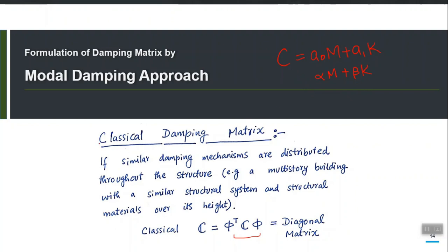In order to be classified as classical damping, the product φᵀCφ should be a diagonal matrix — that is what makes the uncoupling work. When you construct the C matrix by the Rayleigh approach and take this product, the resulting product will be a diagonal matrix. Therefore, the damping is classical, and we call it classical damping.